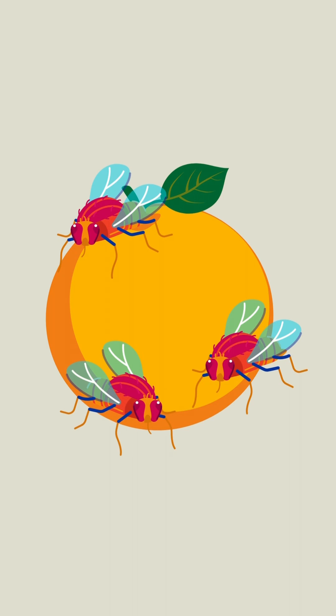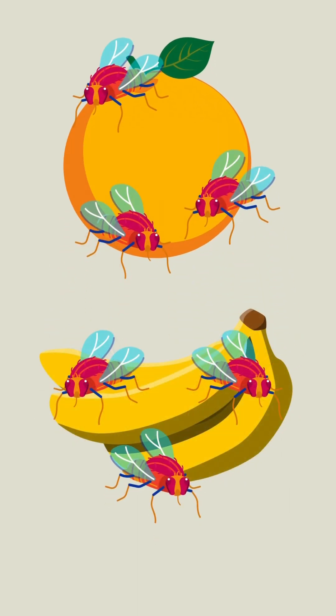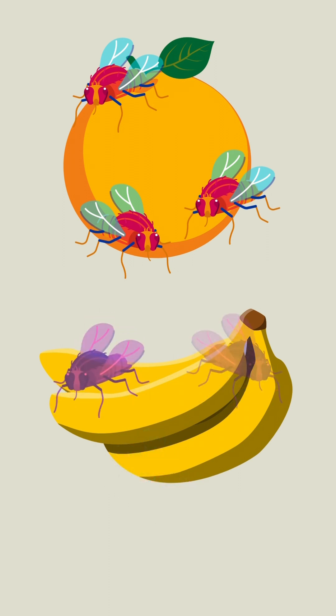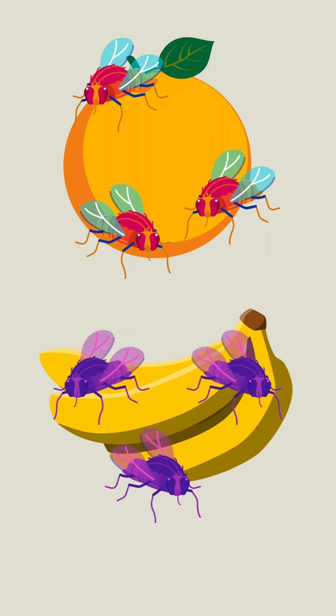For example, a group of fruit flies that evolve the ability to reproduce on a different type of fruit will eventually evolve to be completely different from the original population.